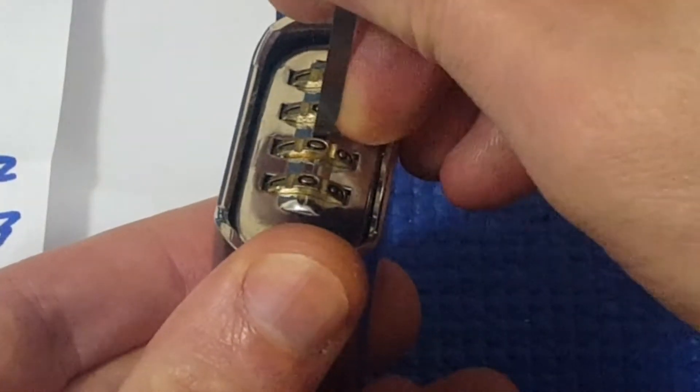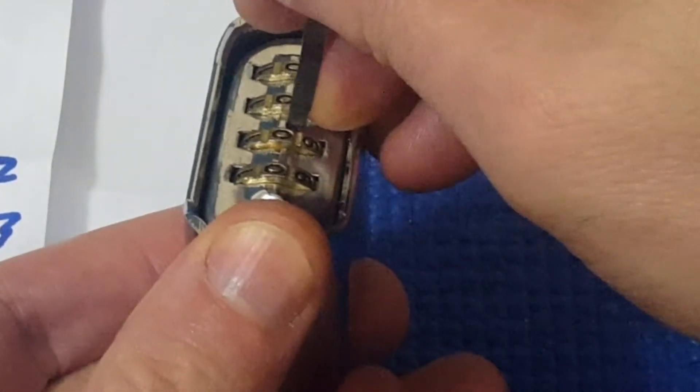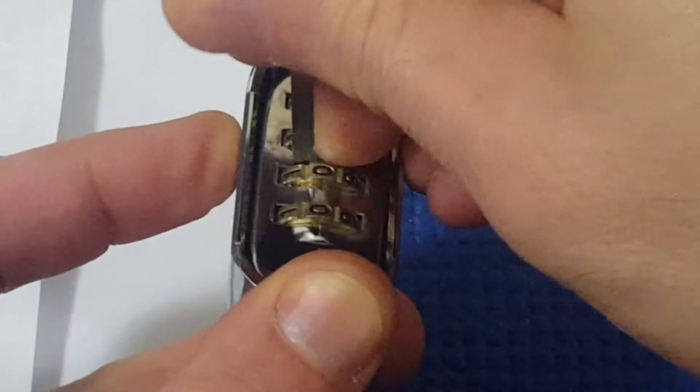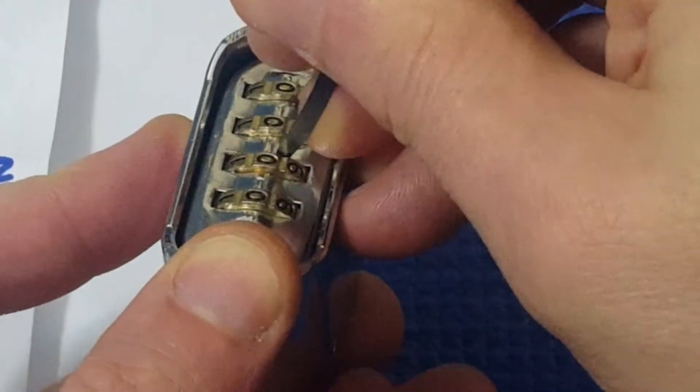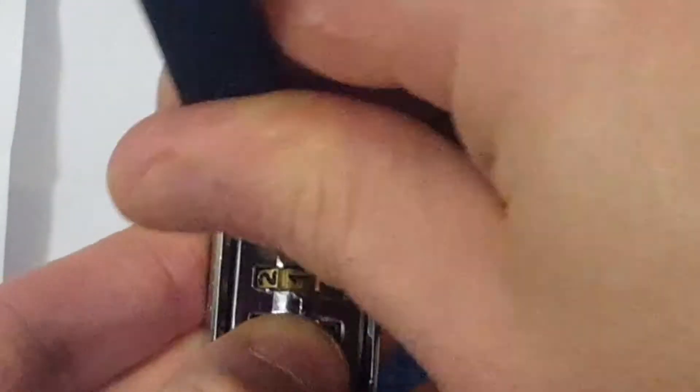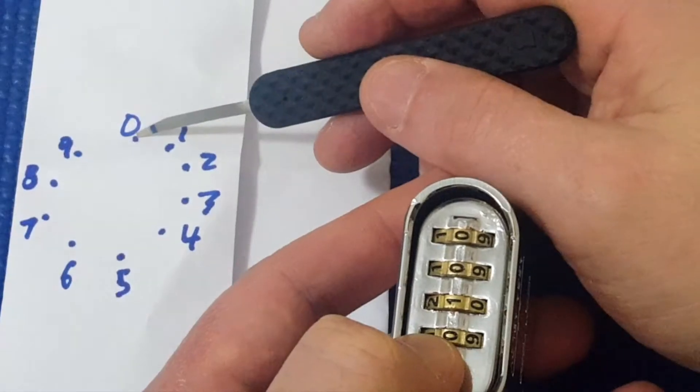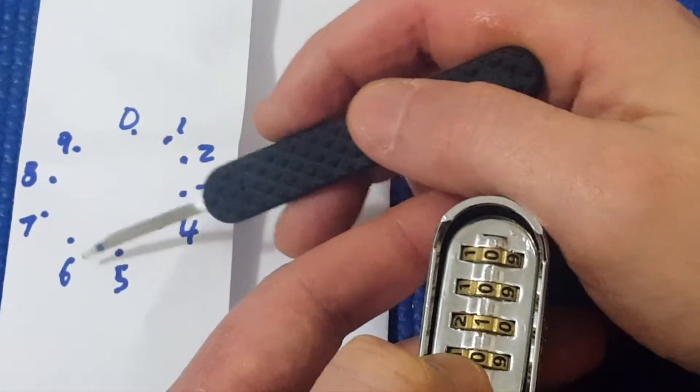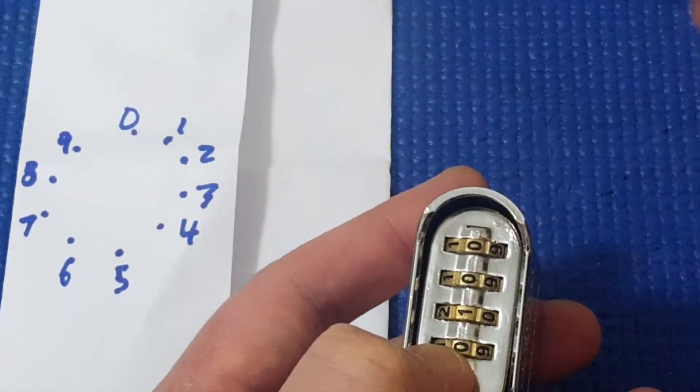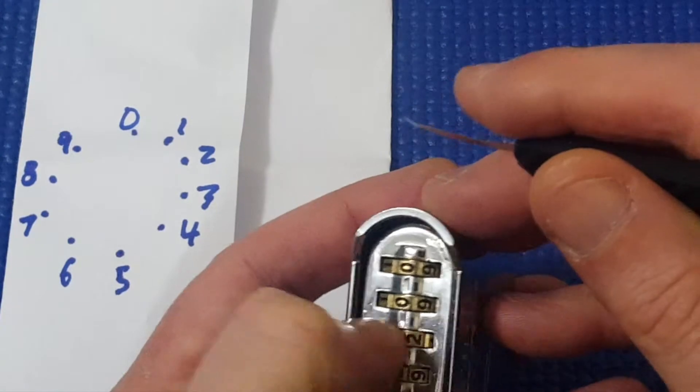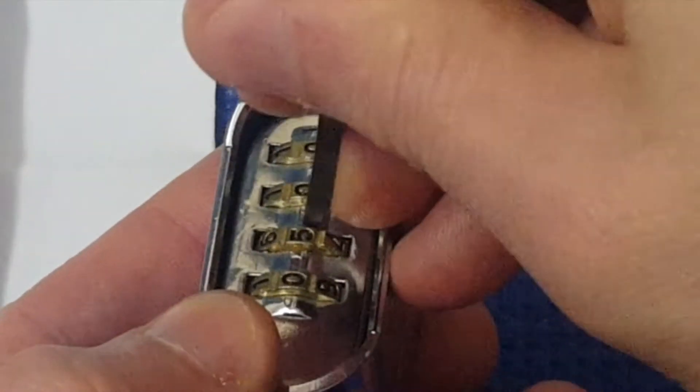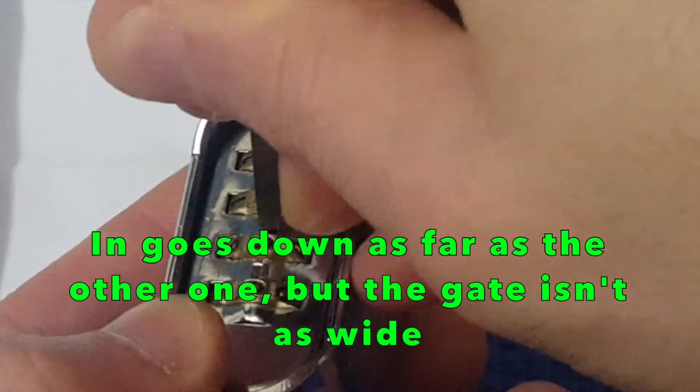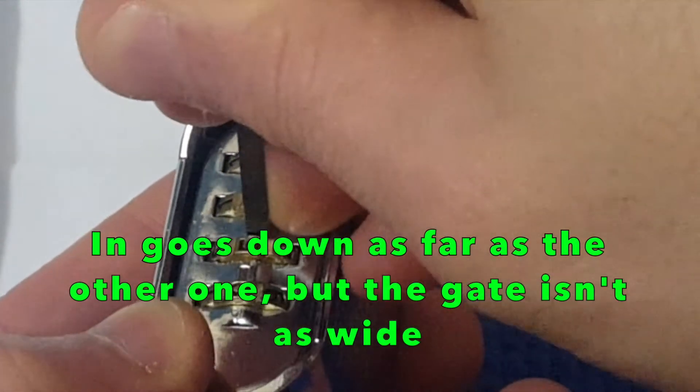So this one goes in at 0 straight away and it seems to be quite a wide gate. If it's 0 and 1, then I'm expecting 5 and 6 to be the other one. So let's go to 5 and 6 and see if that's true. Yep, it goes down. Trying to see how wide these gates are. It doesn't seem quite as wide.